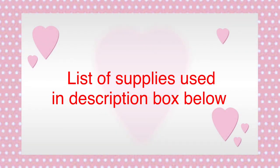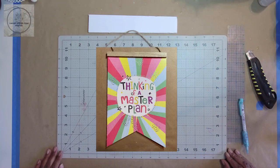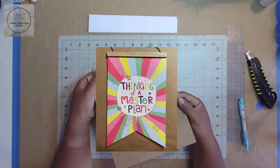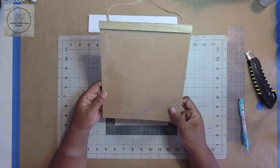A list of the supplies I used is in the description box below. I began with this sign from Dollar Tree and cut it down to eight and seven eighths inches. Then I removed the paper from the sign.